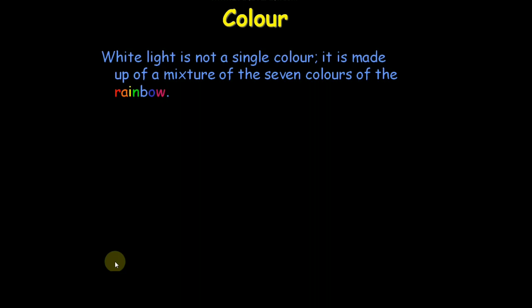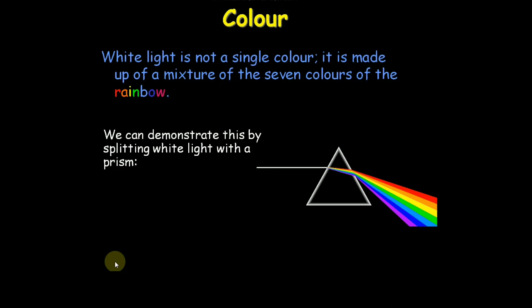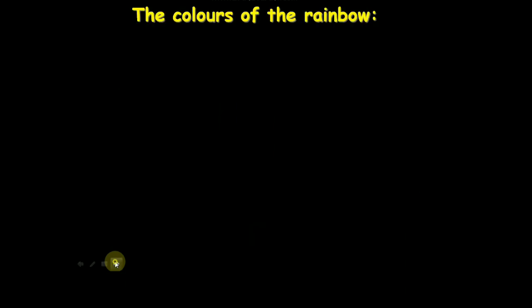Color. White light is not a single color, it is made up of a mixture of seven colors of the rainbow. We can demonstrate this by splitting white light with a prism. This is how rainbows are formed: sunlight is split up by raindrops. The colors of the rainbow: red, orange, yellow, green, blue, indigo and violet.